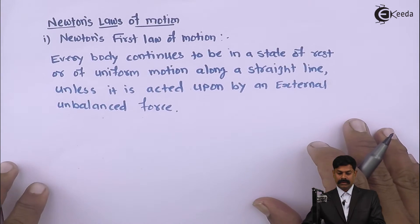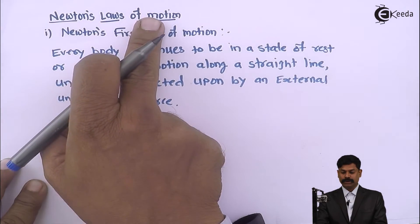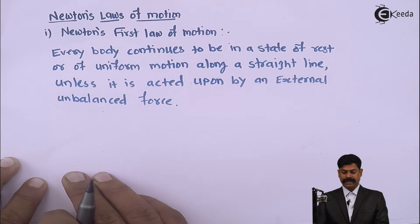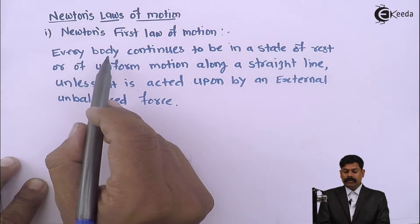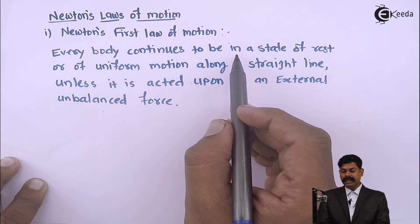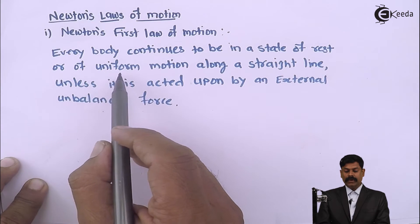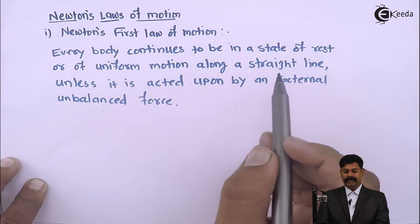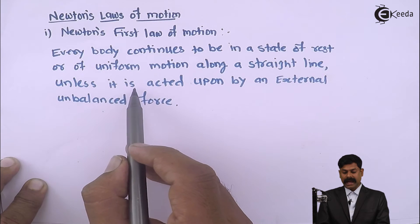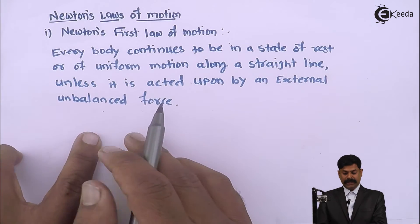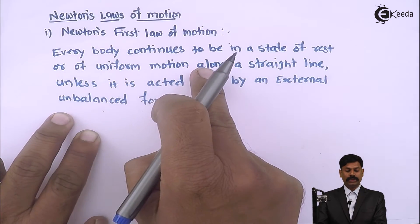Now we will see Newton's laws of motion. Let us discuss Newton's first law of motion. Every body continues to be in a state of rest or of uniform motion along a straight line unless it is acted upon by an external unbalanced force. This is Newton's first law of motion.